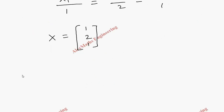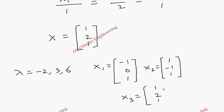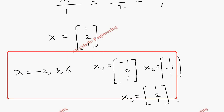So finally, the eigenvalues are minus 2, 3, and 6. The corresponding eigenvectors are: X1 equals [minus 1, 0, 1] for lambda equals minus 2; X2 equals [1, minus 1, 1] for lambda equals 3; and X3 equals [1, 2, 1] for lambda equals 6. We have successfully found the eigenvalues and eigenvectors for the given matrix of order 3.